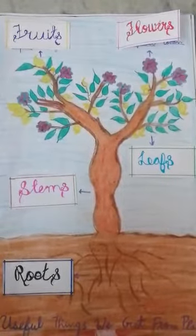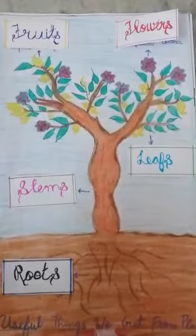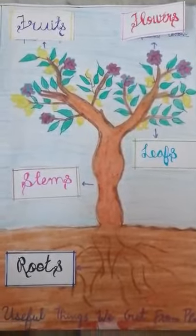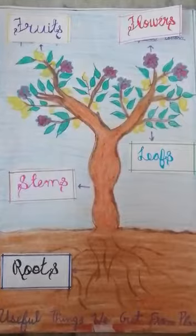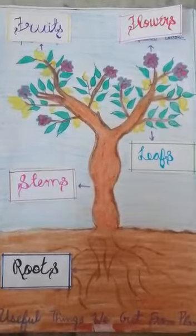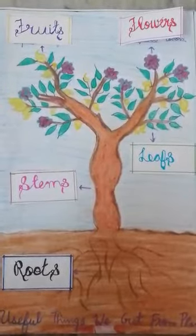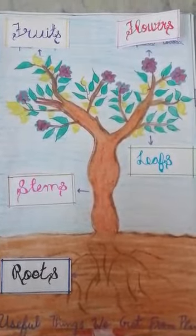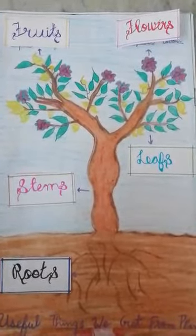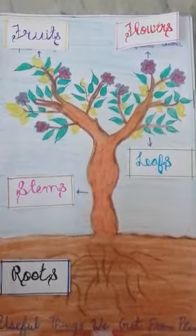Good morning. I am Avika Upadhyay from class 6th B. Today I am representing a chart on useful things we get from plants.